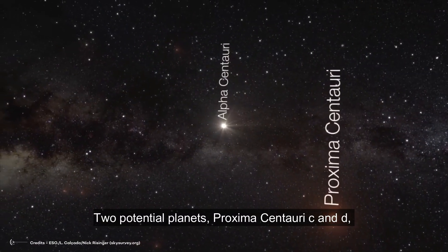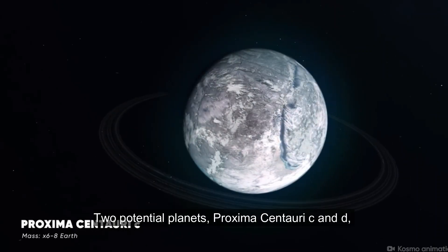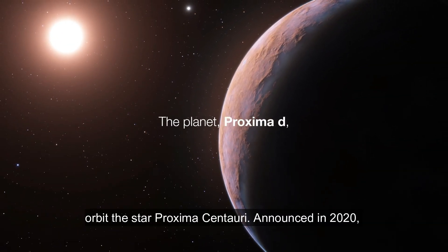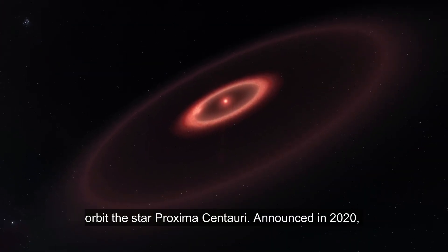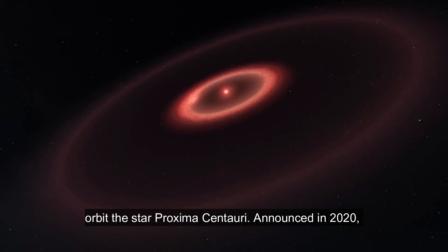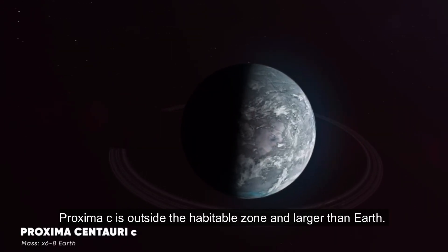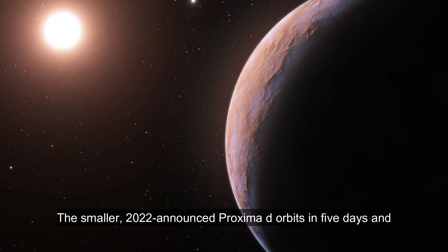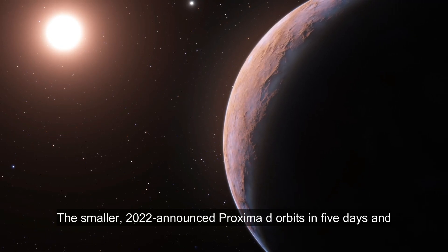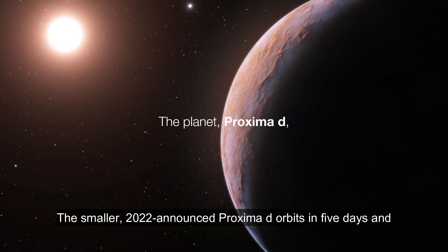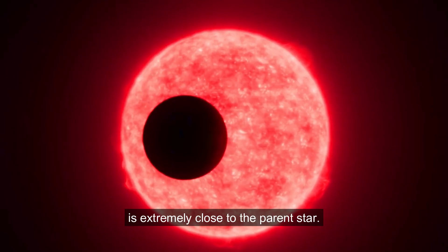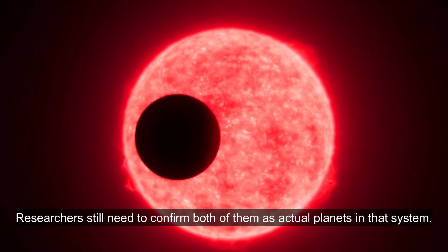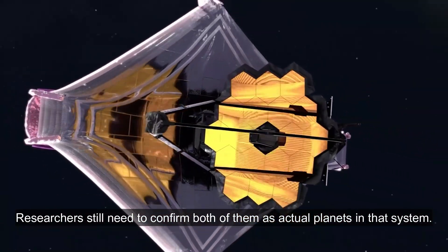Two potential planets, Proxima Centauri C and D, orbit the star Proxima Centauri. Announced in 2020, Proxima C is outside the habitable zone and larger than Earth. The smaller, 2022-announced Proxima D orbits in five days and is extremely close to the parent star. Researchers still need to confirm both of them as actual planets in that system.